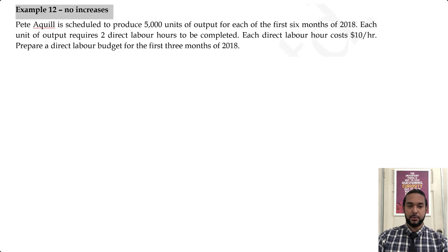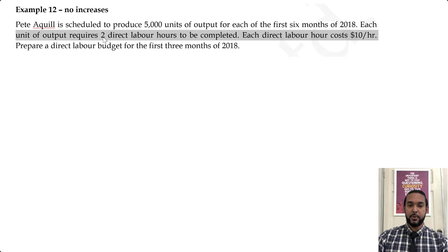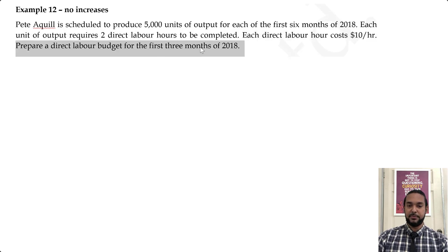Example one — no increases. Pete Aquil is scheduled to produce 5,000 units of output for each of the first six months of 2018. Each unit of output requires two direct labour hours to be completed, and each direct labour hour costs $10 per hour. Prepare a direct labour budget for the first three months of 2018.